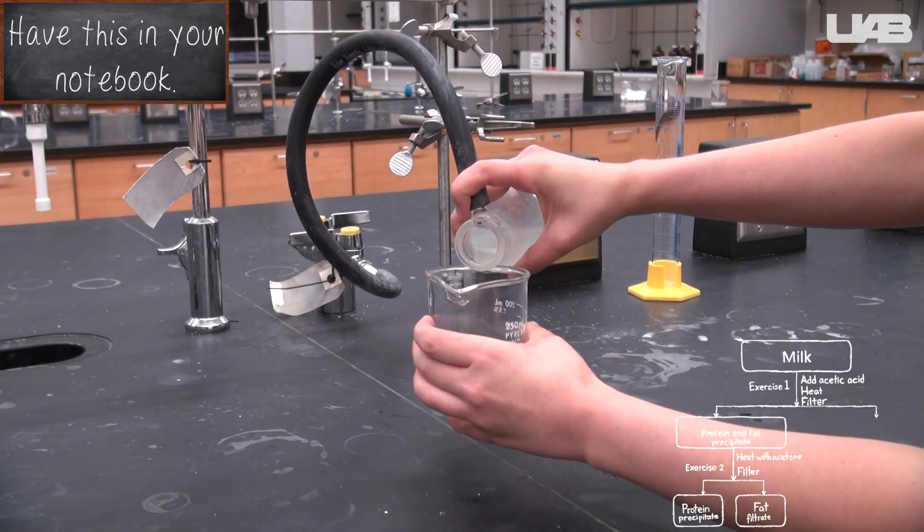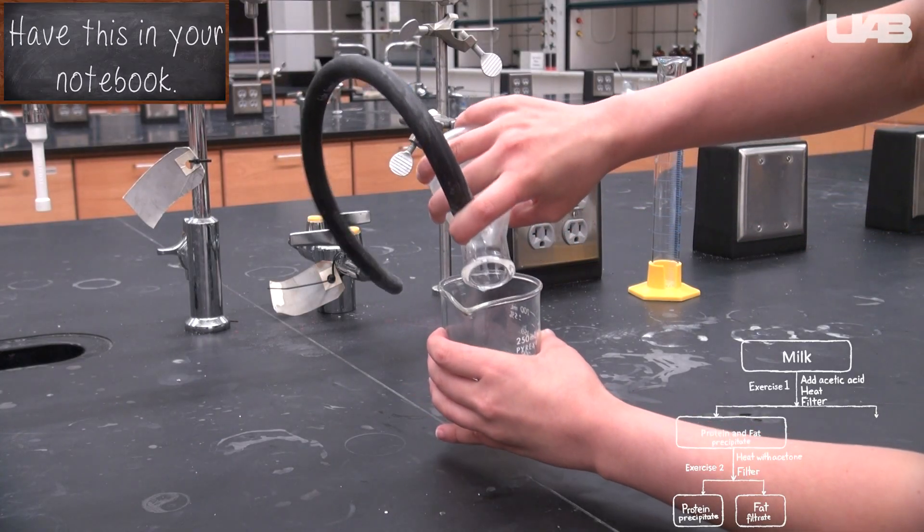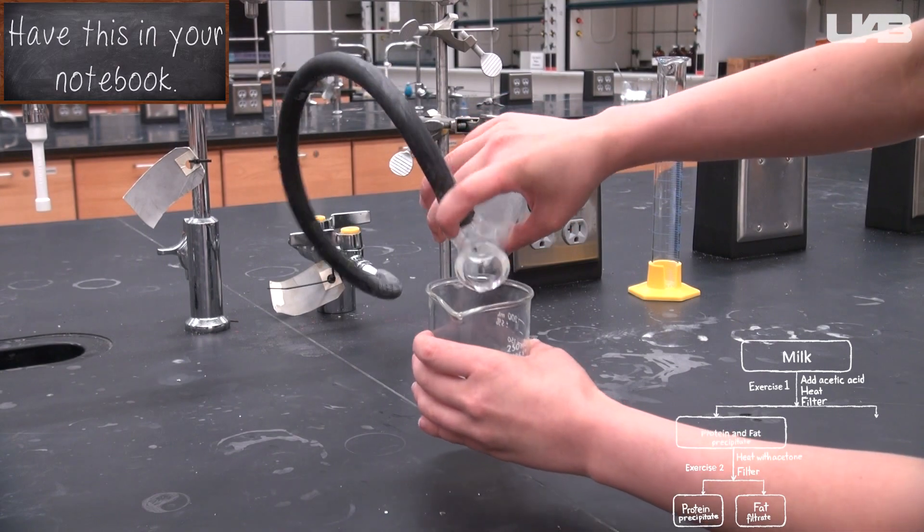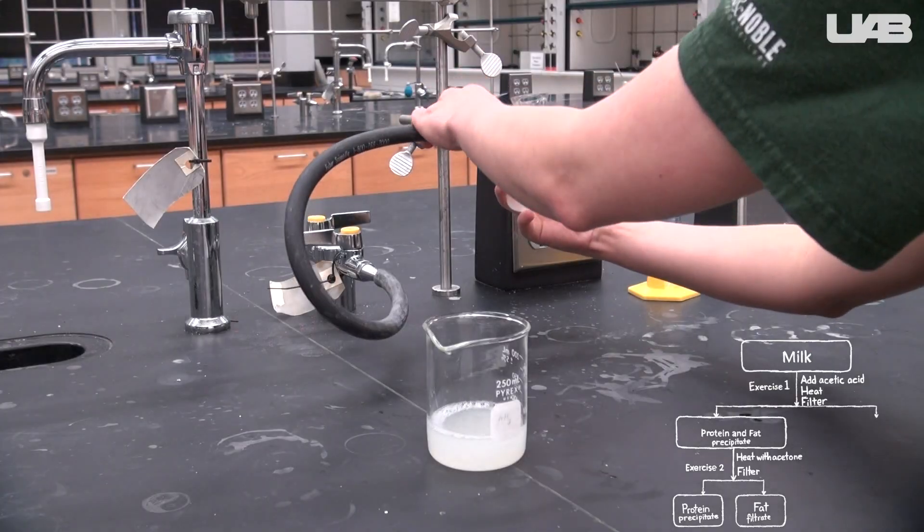When you pour the filtrate into the beaker, pour away from the side arm so that the liquid does not go into the side arm or the tubing. You want all the filtrate to end up in your beaker.